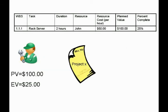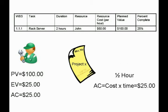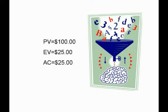Actual cost represents the effort expended to arrive at the current completion level for the deliverable. We've created $25 of earned value on our task, but now we need to compare the value created to the cost incurred. Looking at the timesheet, our engineer charged one half hour to the project at a bill rate of $50 an hour, so the actual cost for this task so far is $25. So we have our planned value of $100, earned value of $25, and actual cost of $25.